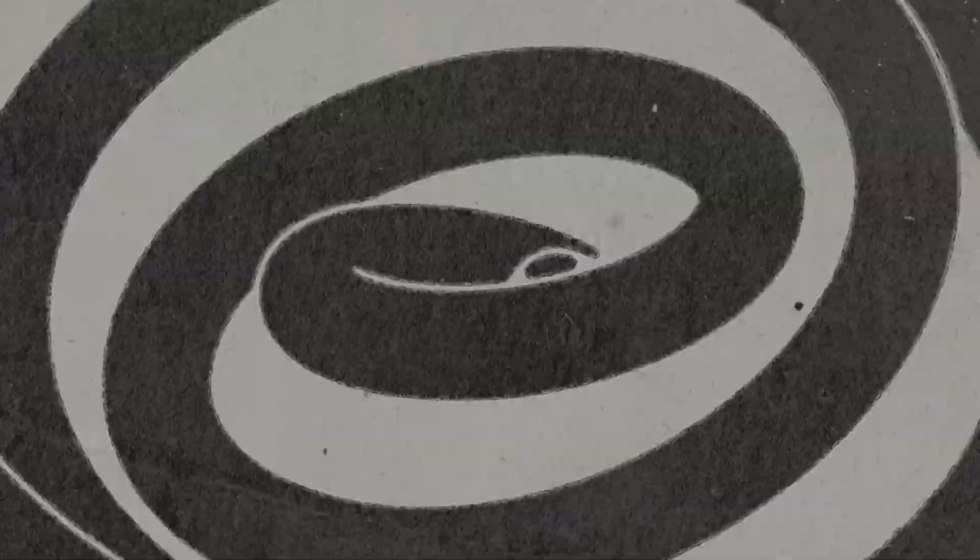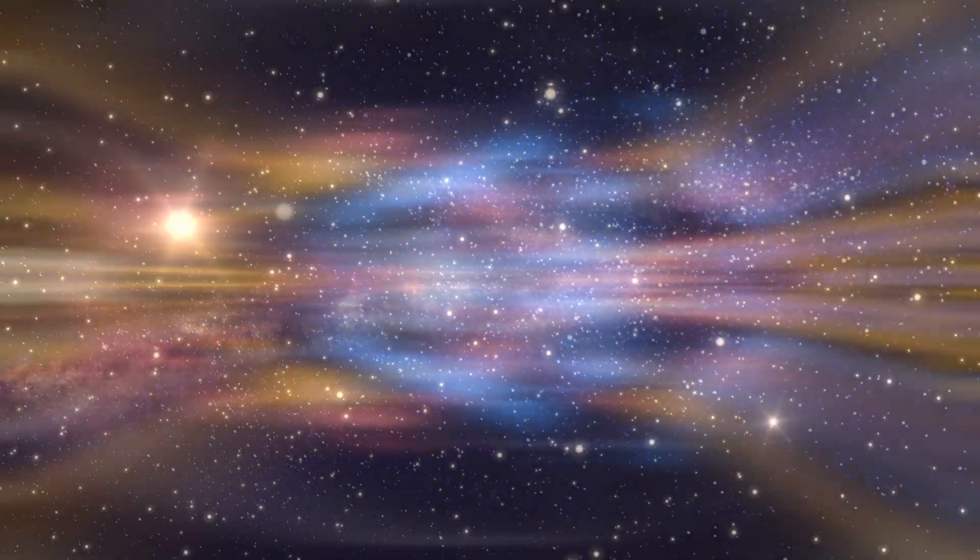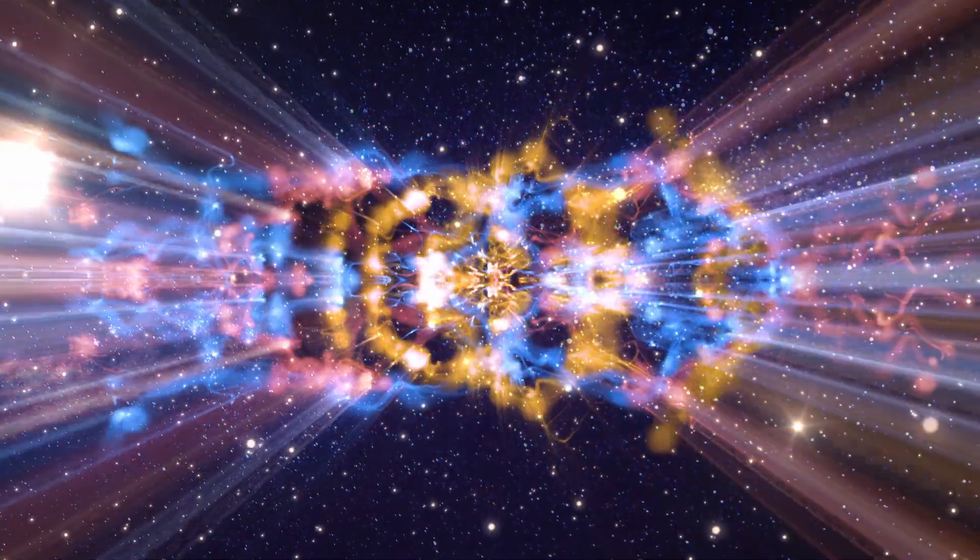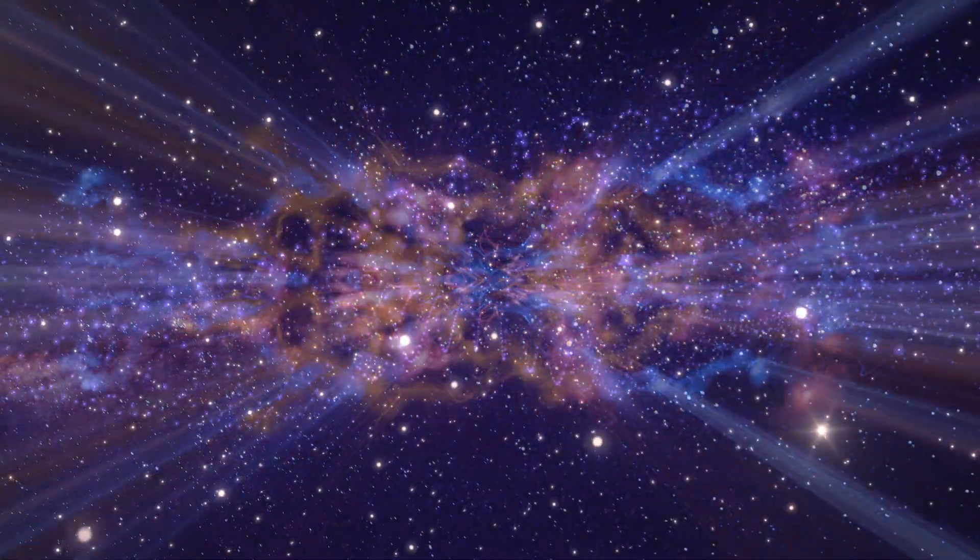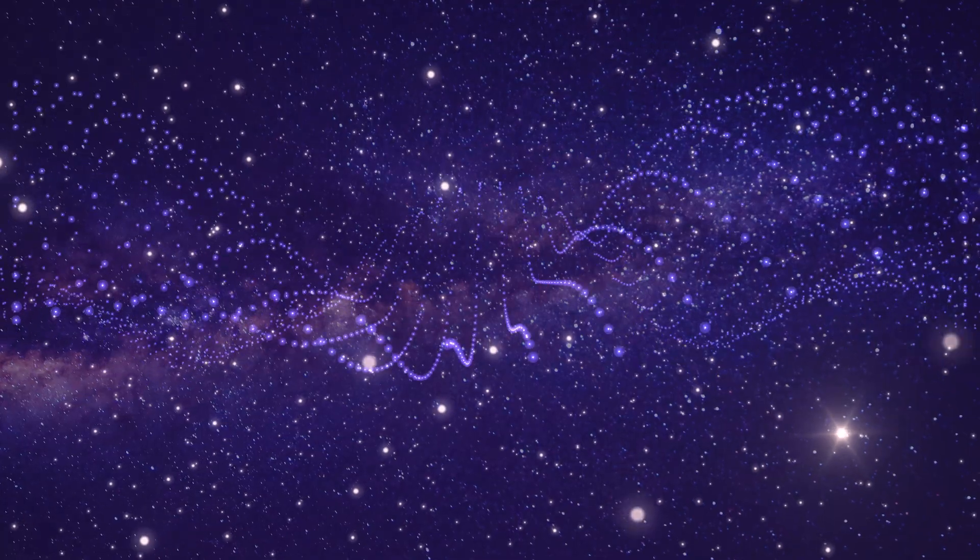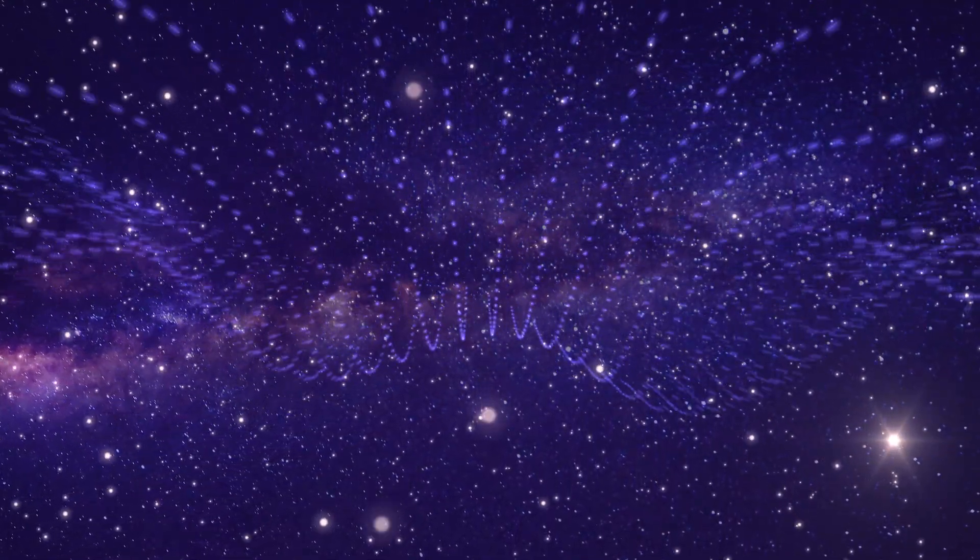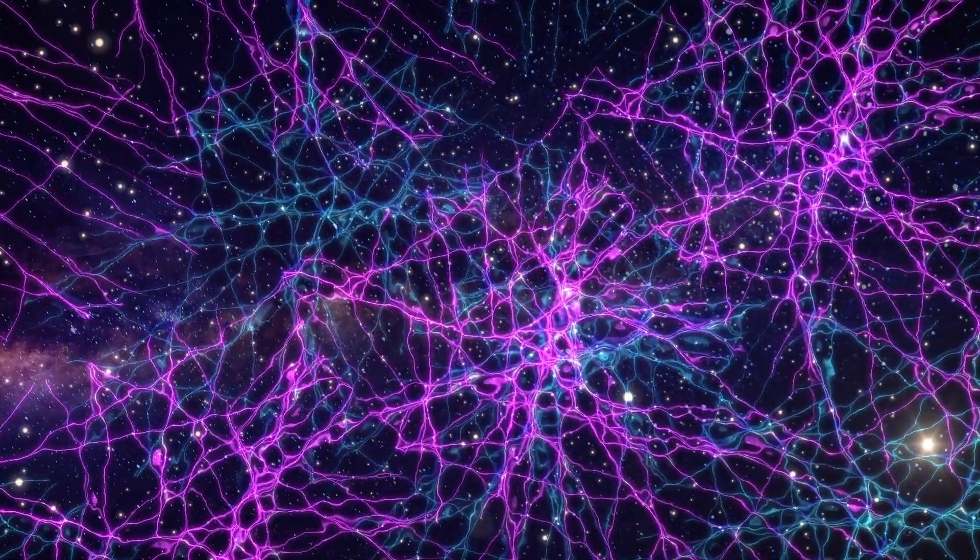Everything around us, including ourselves, is made up of tiny particles called atoms. These atoms are always moving, and because of this movement, they don't stick together perfectly. This means that there are tiny gaps between them. It's as if the world were a swiss cheese on a microscopic scale, full of holes invisible to our eyes.